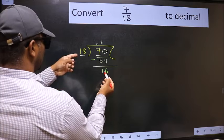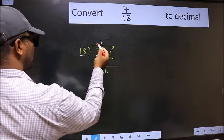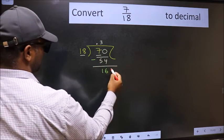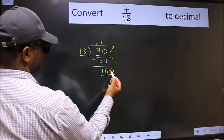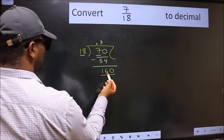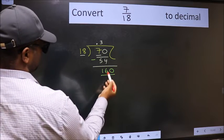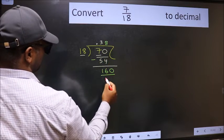16 is smaller than 18, and we already have the decimal. So this time we can directly take 0. So 160. A number close to 160 in 18 table is 18 eighths, 144.